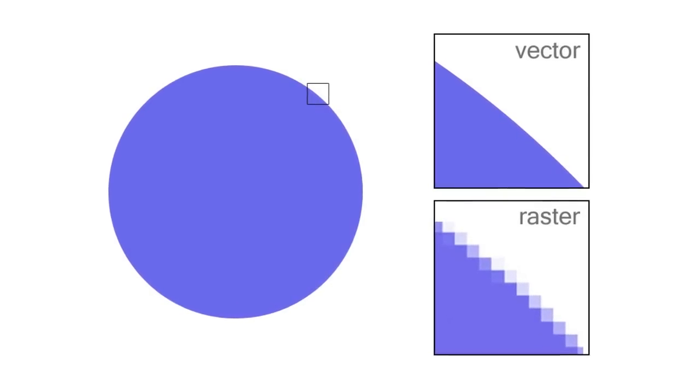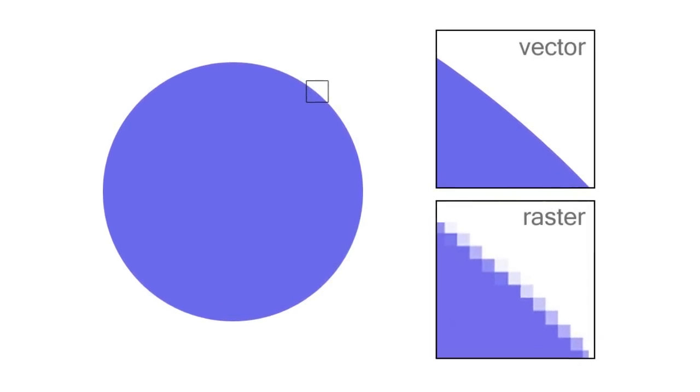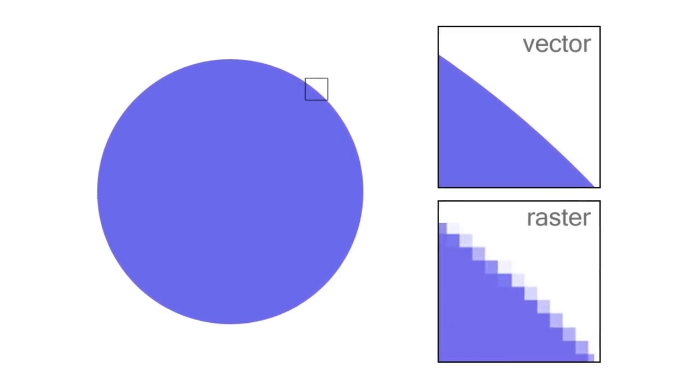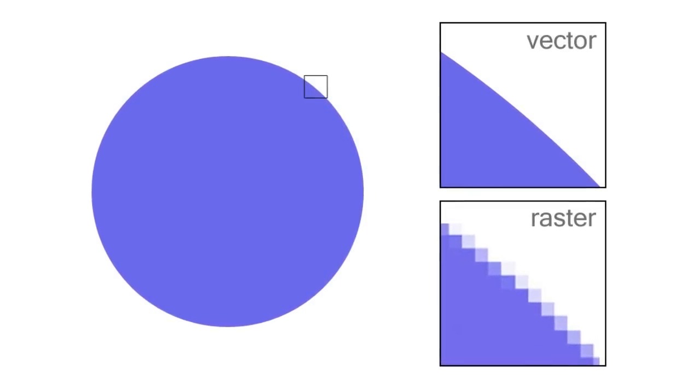Raster, on the other hand, are based on pixels — so photographs, things like that. You scale them up, if they're too low res, they will become blurry and pixelated. Now, Illustrator deals with vector, Photoshop deals with raster.